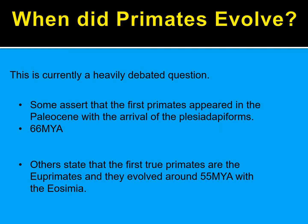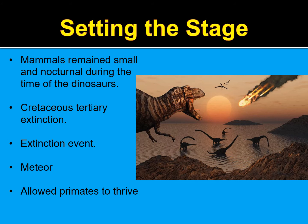When did our first primates evolve? This is currently a heavily debated question. Some assert that the first primates appeared in the Paleocene with the arrival of a class of mammals called Plesiadapiforms at or around 66 million years ago. Others state that the first true primates are the euprimates, and they evolved around 55 million years ago with the Eosimias.